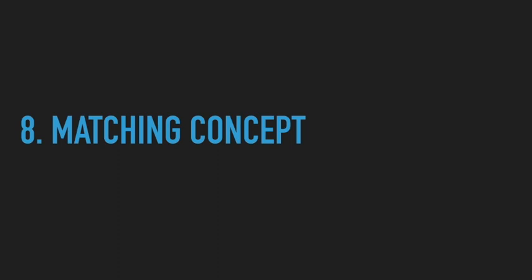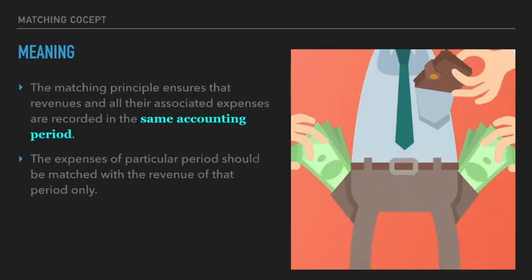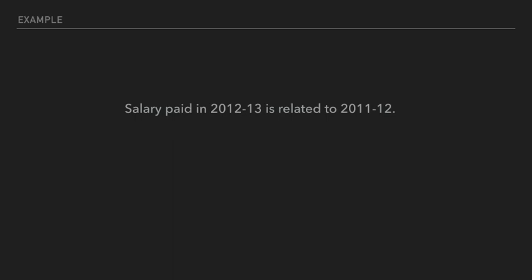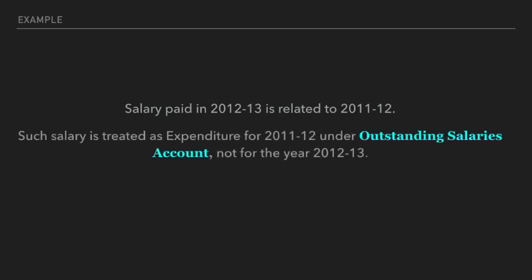The next concept is the matching concept. The matching concept states that if an expense belongs to a particular year, it should be matched against the revenue of that same year. Expense and revenue should be matched for the same period. For example, if a salary paid in 2012-13 is actually related to 2011-12, we record it in 2011-12 as an outstanding salary — not in 2012-13 — because it is an expense of that year.